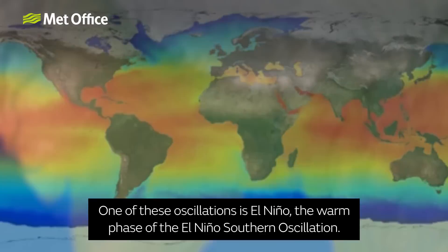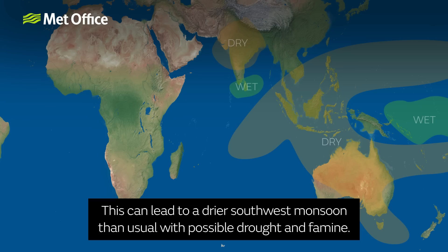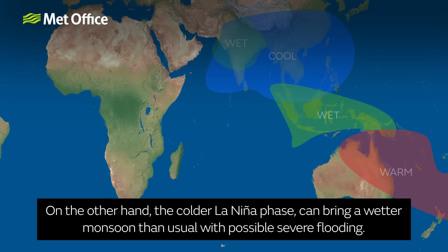One of these oscillations is El Niño, the warm phase of the El Niño southern oscillation. This can lead to a drier southwest monsoon than usual, with possible drought and famine. On the other hand, the colder La Niña phase can bring a wetter monsoon than usual, with possible severe flooding.